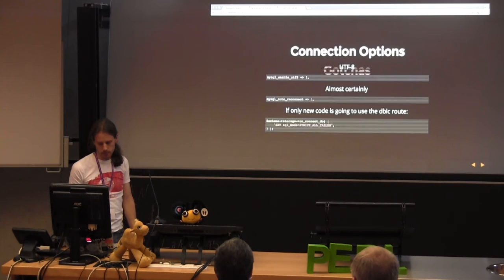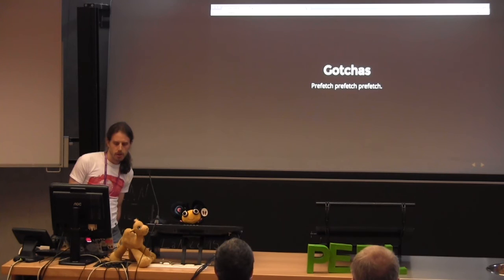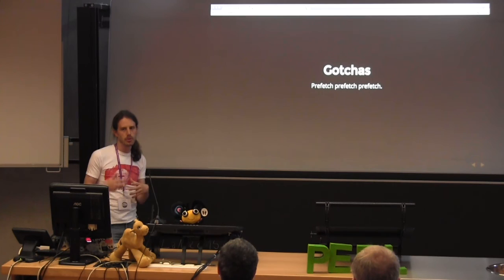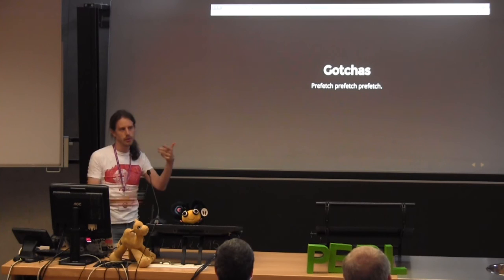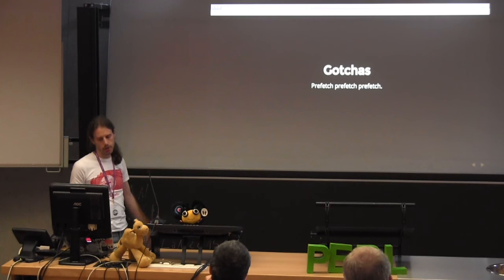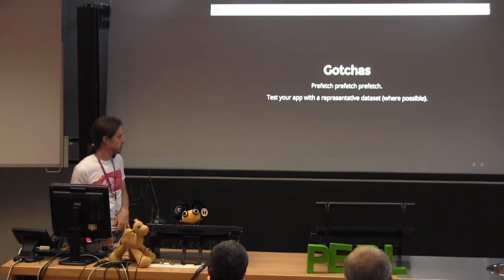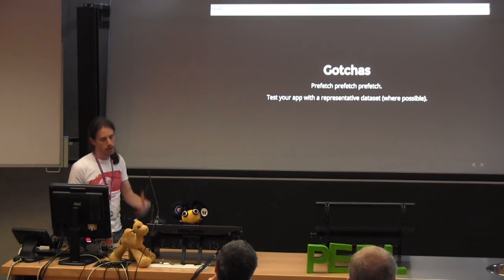A key gotcha: prefetch. DBIx::Class has a tendency, if you don't tell it to prefetch tables, to potentially go quadratic or exponential on the number of queries it runs. If you have nested loops and then another one, suddenly you've got a thousand queries where you should just have three or four. That's where that debugging code comes in useful — you can find all those queries that you should be consolidating.